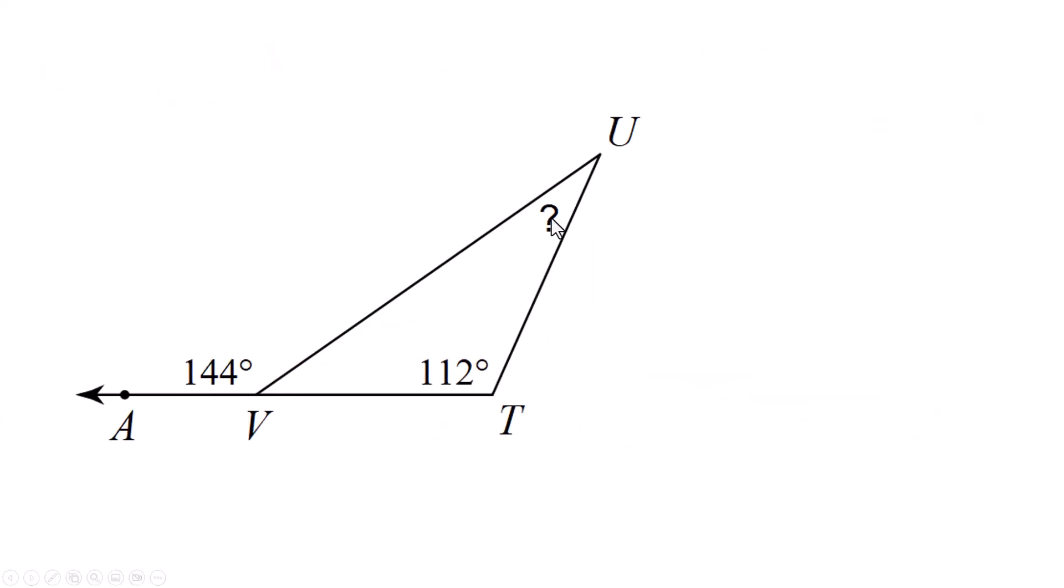We've got an unknown angle up here. Right away they're telling me what the exterior angle is and they're telling me what one of the two angles are that add up to be this. So here's how we're going to do this. I'm going to call this x. Make myself a little equation. x plus 112 equals 144. Subtract 112 from 144 and we get 32. Done. Pretty fast, right?